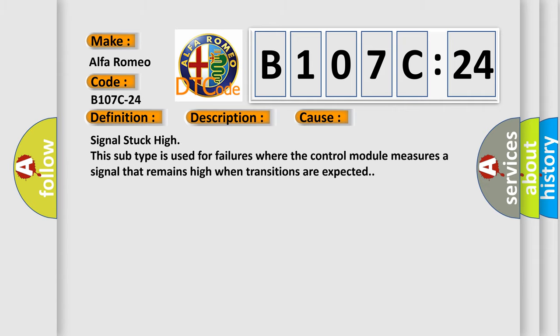This diagnostic error occurs most often in these cases: Signal stuck high. This subtype is used for failures where the control module measures a signal that remains high when transitions are expected.